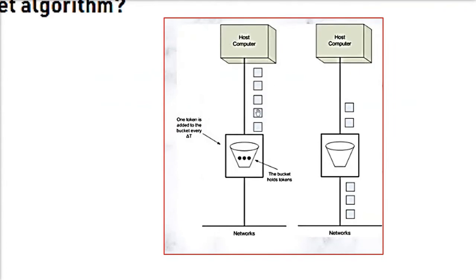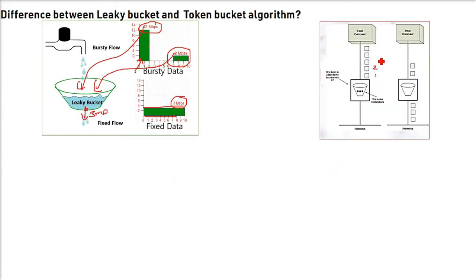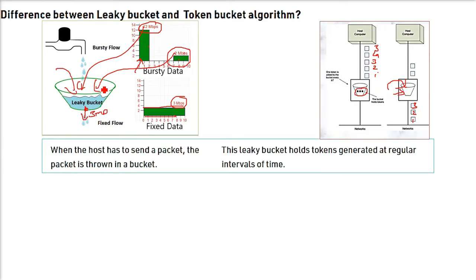Now, here we have 5 packets. In this bucket, there are 3 tokens. The packet has to grab a token and then only it can come out. So 1st, 2nd, 3rd, they are getting the token which is there inside the bucket. They are grabbing the token and they are coming out. But the tokens are finished now. These 2 remaining packets will remain as it is. They will not be able to enter the channel.